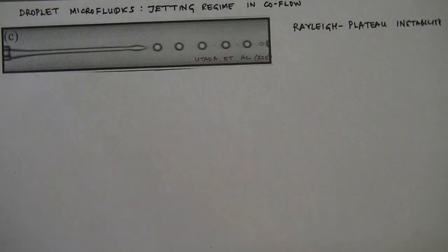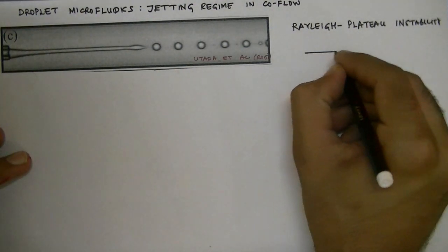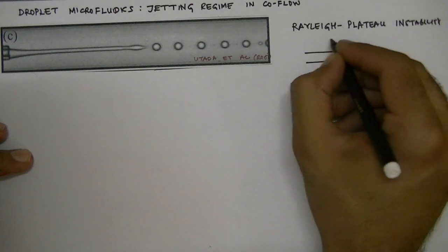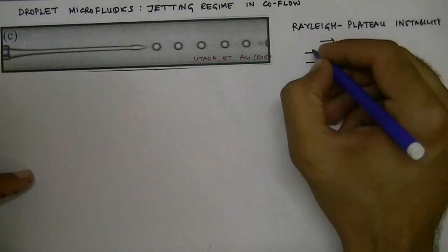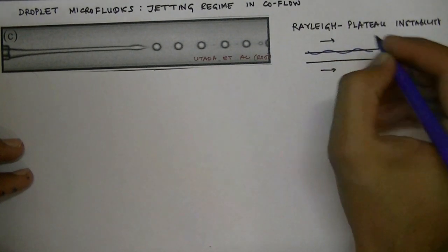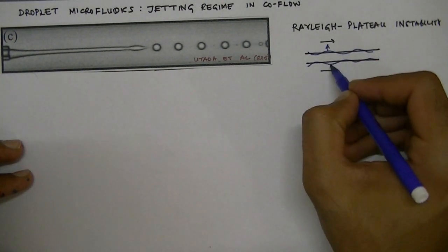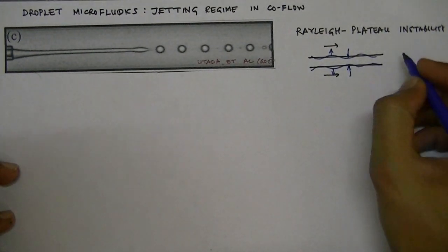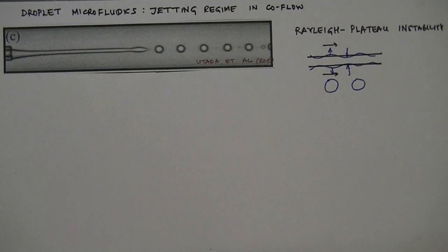In the Rayleigh-Plateau instability, consider a cylindrical jet of inner fluid moving along with the outer fluid. If we have some disturbances on this immiscible interface, these disturbances actually further amplify — the maxima will keep on increasing and the minima will keep on decreasing — so that eventually we will form these drops.